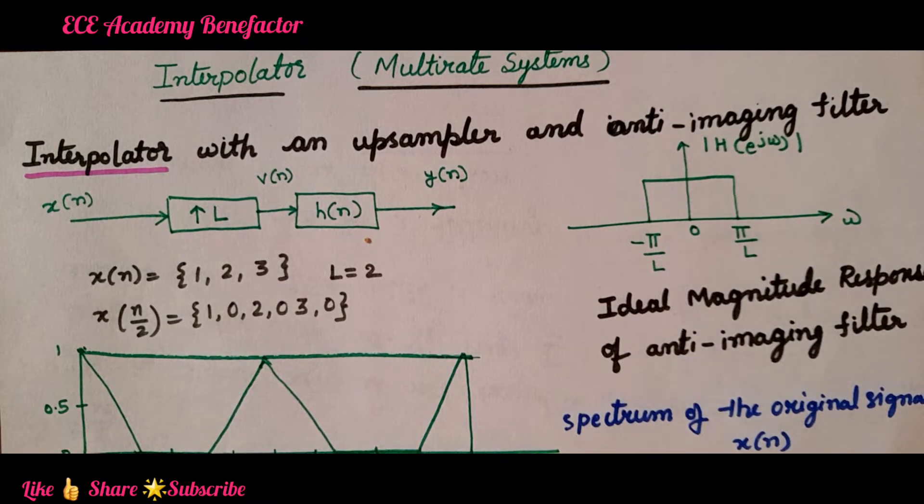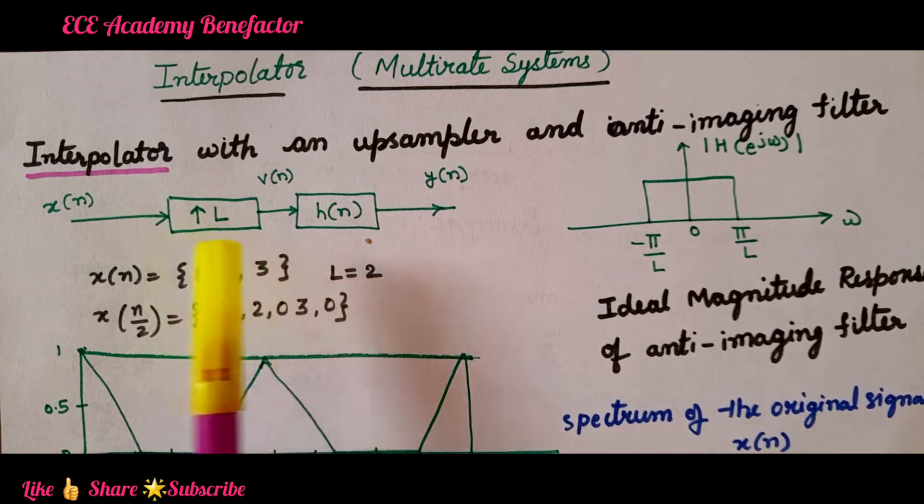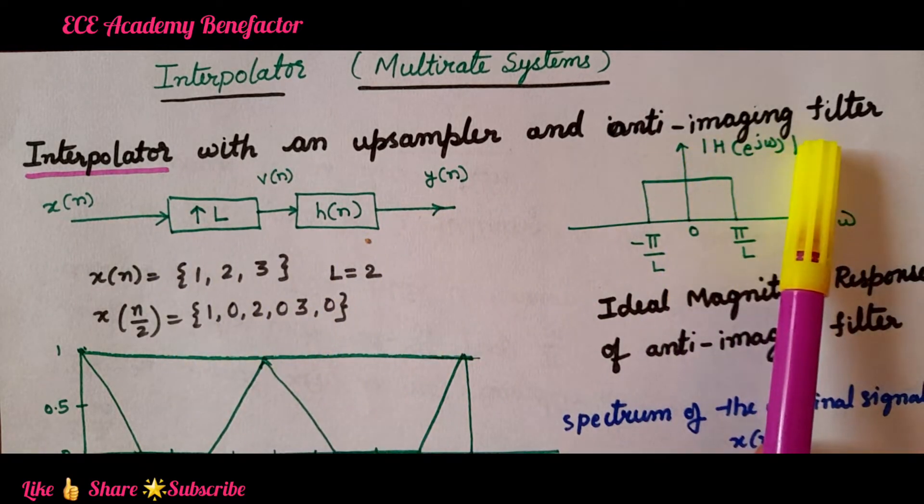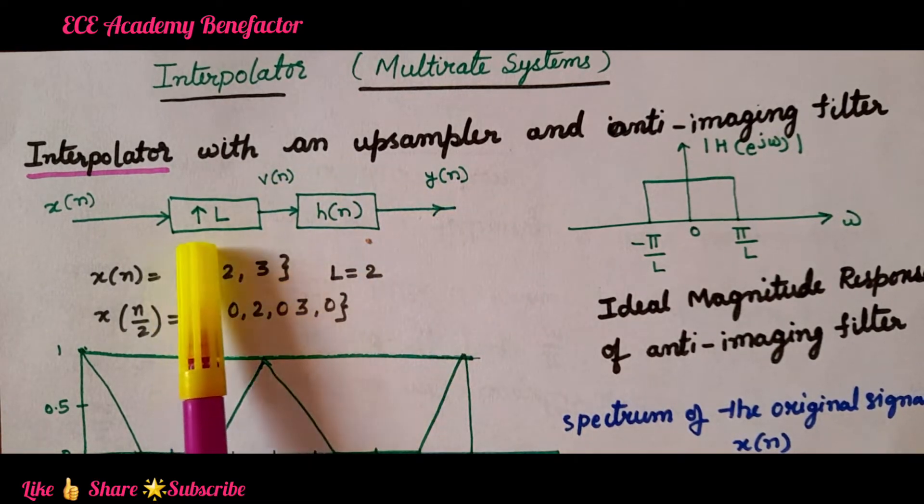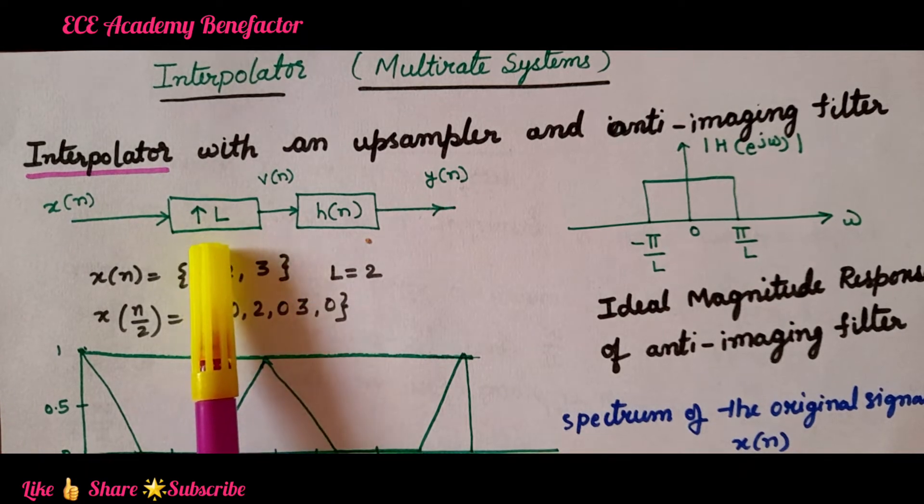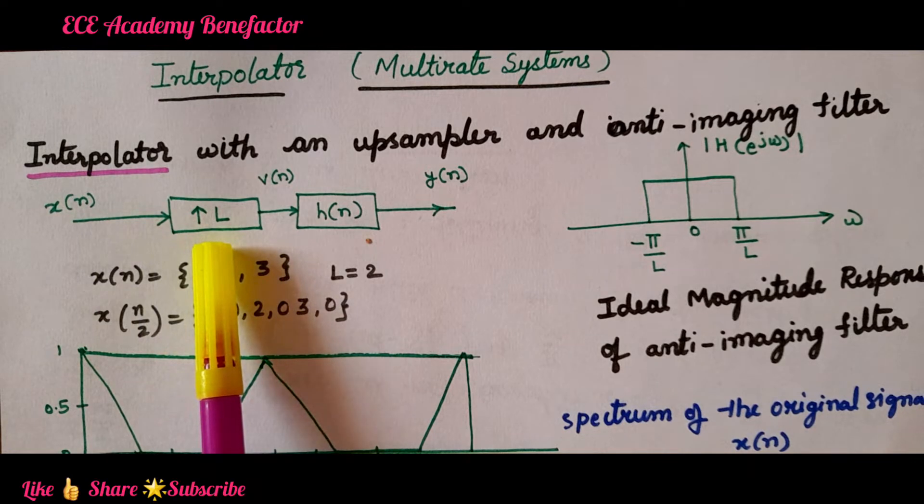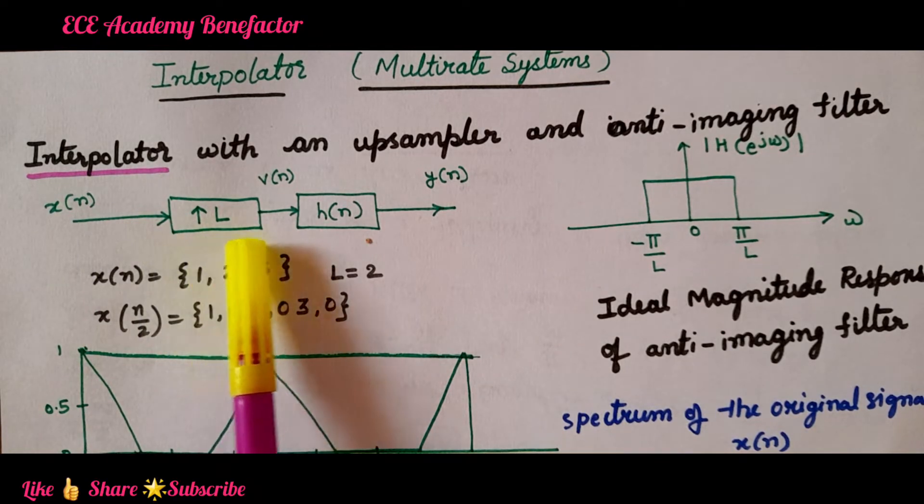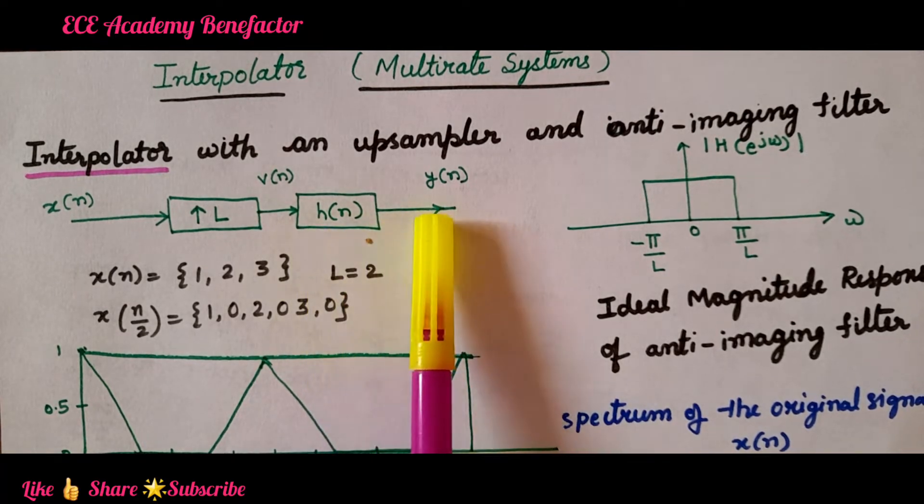Let us see the block diagram of an interpolator. An interpolator with an upsampler and an anti-imaging filter. This is a block diagram of an interpolator. It will comprise of an upsampler. The input signal x(n) is upsampled by a factor capital L and is then passed through an anti-imaging filter to get the upsampled signal y(n).